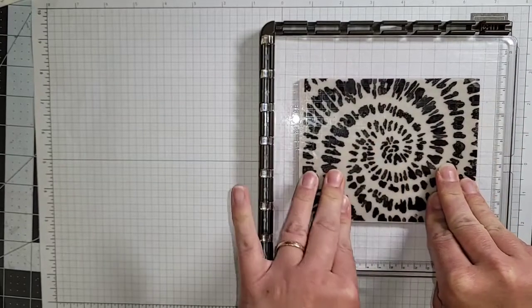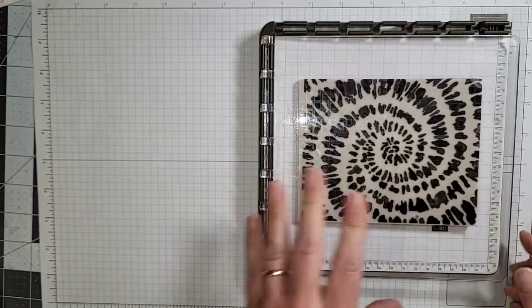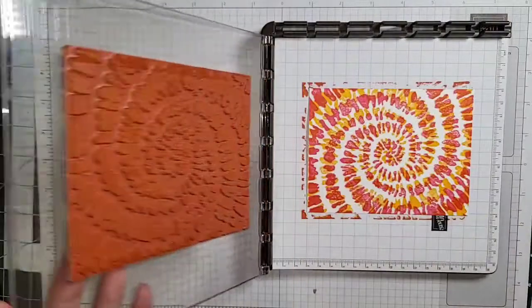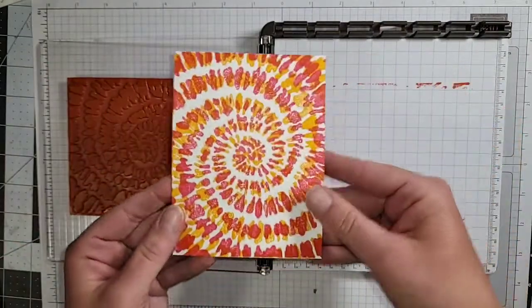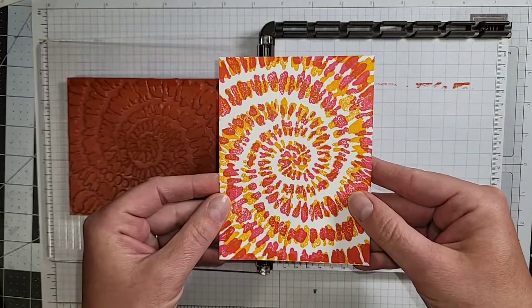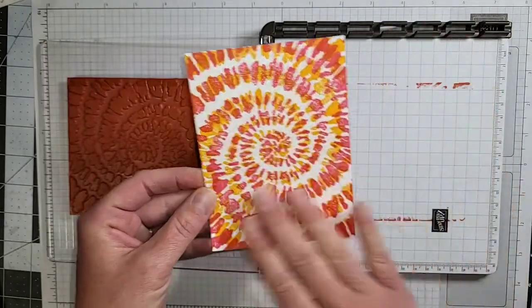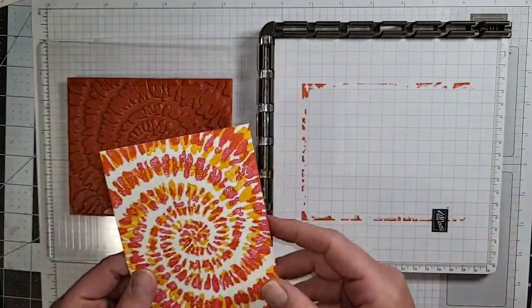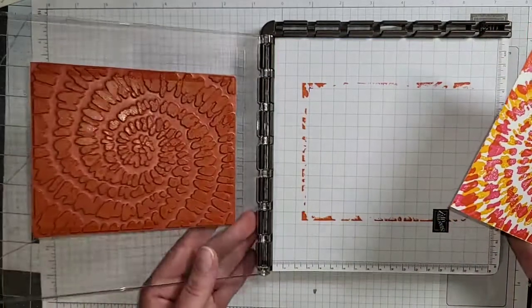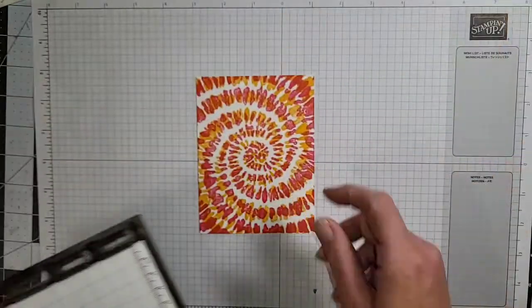More pressure just like we did the first time and I'm going to lift it off. And there we've got this super cool background so it looks just like a tie-dye shirt that I remember with those bright fun colors and that great design. So I'm done with the Stamparatus. I'm just going to push this off to the side here and we'll build the remainder of the card.